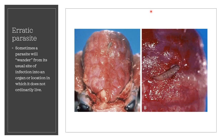When Cuterebra migrates into the skullcap, it becomes an erratic or aberrant parasite — meaning the parasite has become lost on its migration path. In this figure, the Cuterebra species, which are normally found in the skin of dogs or cats, may migrate into the cranial vault or the skullcap. Another figure shows the enlargement of the parasite in the cranial vault of the skull.